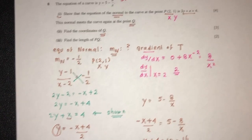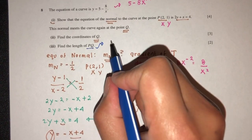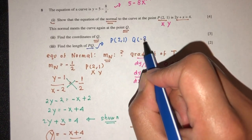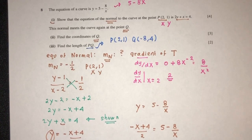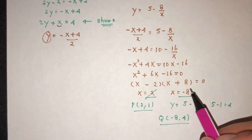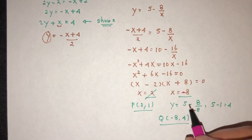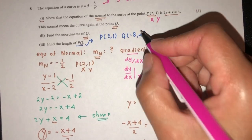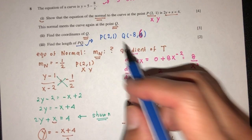Now let's move on to part 3: find the length of PQ. We have P given as (2, 1) and Q was found to be (minus 8, 4). Actually, I think I made a mistake here — if the value of x is minus 8, that will be 5 plus 8 over 8, which should be 6. There you go. Now we have the two values we need to find the length.